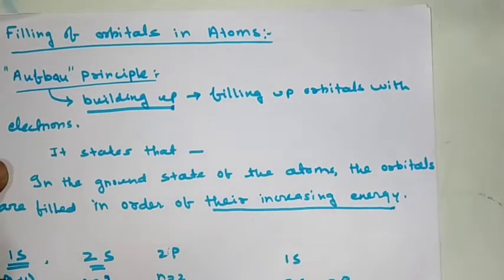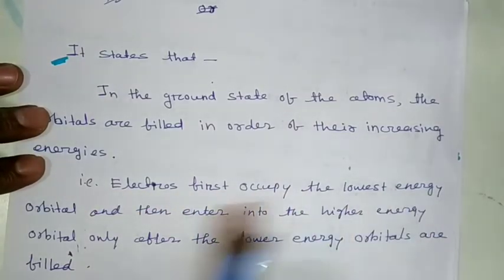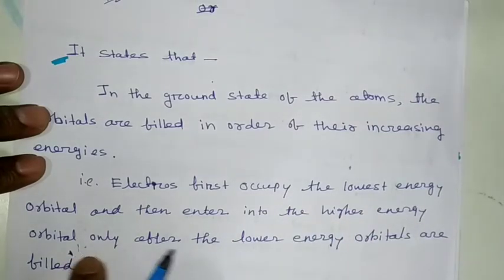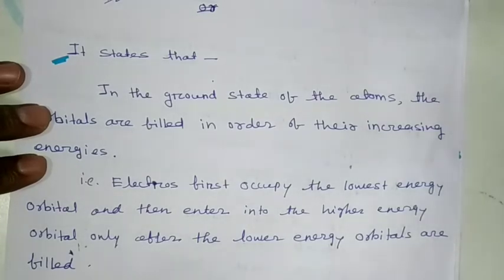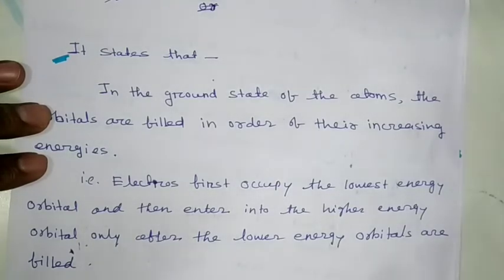So, in order of increasing energy, the electrons fill the orbitals. The rule is that electrons first occupy the lowest energy orbitals, and then enter into higher energy orbitals only after the lower energy orbitals are filled. This principle is called the Aufbau principle.